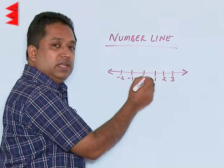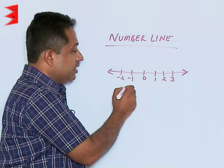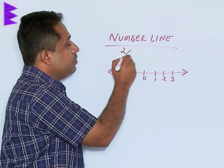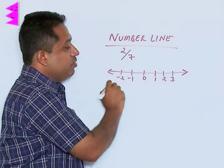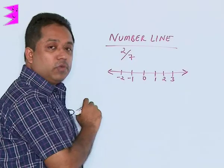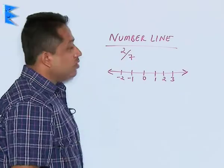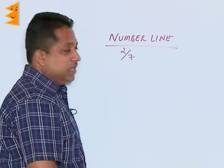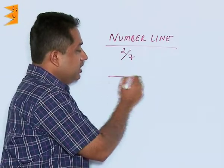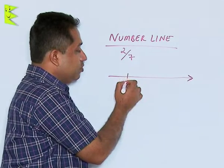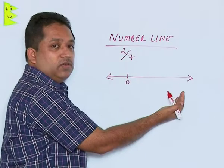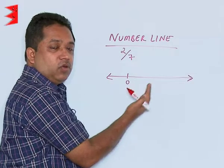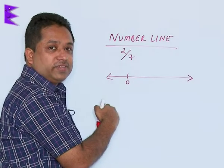What we are going to learn in this chapter is how to represent rational numbers. For example, given a rational number 2 by 7, we are going to find out how to plot it on the number line. Since 2 by 7 is a positive number, it will lie on the right side of 0, as all positive numbers are on the right and all negative numbers are on the left.